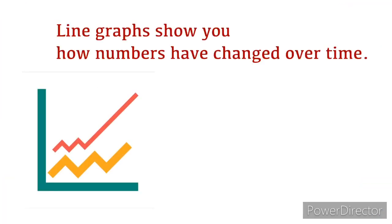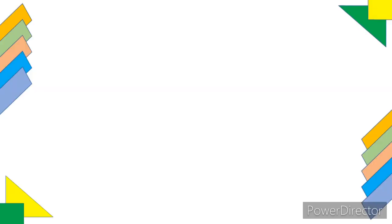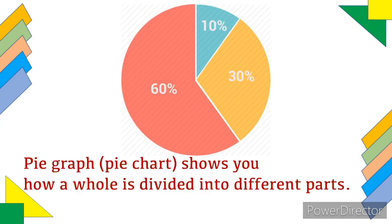Line graphs show you how numbers have changed over time. They usually have continuous data along a vertical y-axis and horizontal x-axis. The y-axis usually shows the value of whatever variable is being measured, and the x-axis commonly presents when it was measured, either chronologically or based on other independent variables. A pictograph or pictogram is a special type of bar graph that uses pictures to represent a particular number of items. A pie graph or pie chart shows how a whole number is divided into different parts — for example, showing how a budget was spent on different items in a particular year.